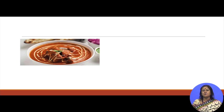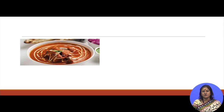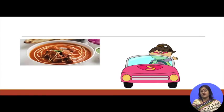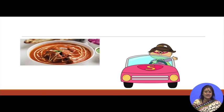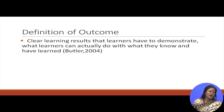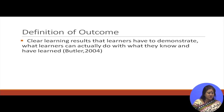If you know only the recipe of butter chicken masala but cannot make it, there is no use — the outcome is to make the butter chicken masala. Similarly, suppose you have a driving license but cannot drive the car properly, there is no use. The outcome is to actually drive the car. According to Butler, the definition of outcome is: clear learning results that learners have to demonstrate — what learners can actually do with what they know and have learned. Actions, products and performance that embody a learner's competence in using content, information, ideas and tools successfully, according to Gezer and Spady.